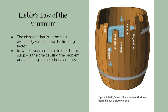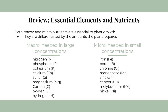Of the essential elements, there are the macro elements which you need in large concentrations — nitrogen, phosphorus, potassium, calcium, sulfur, and others. Then there are microelements needed in much, much smaller concentrations, such as iron, boron, chlorine, and manganese.